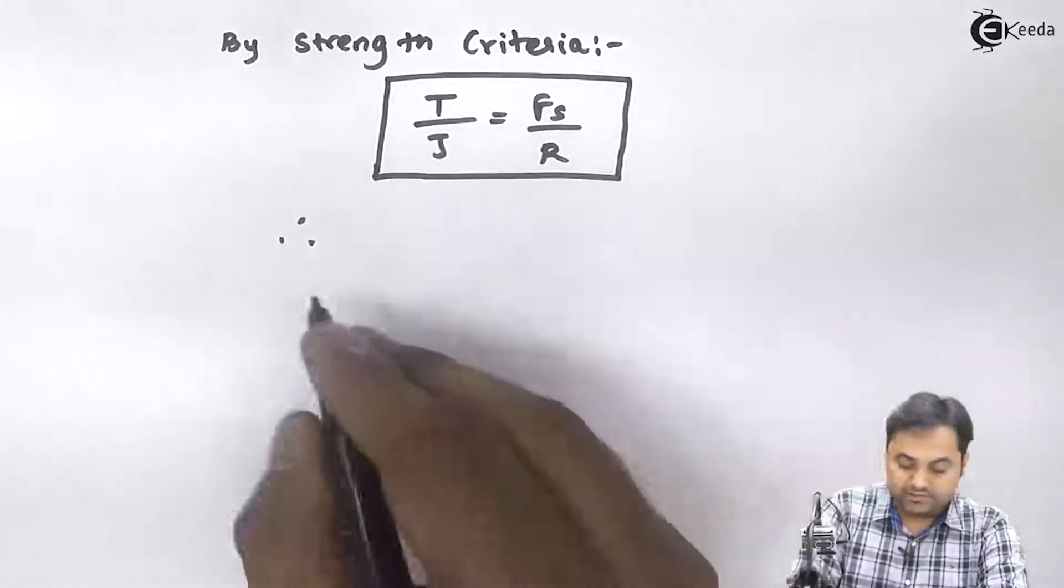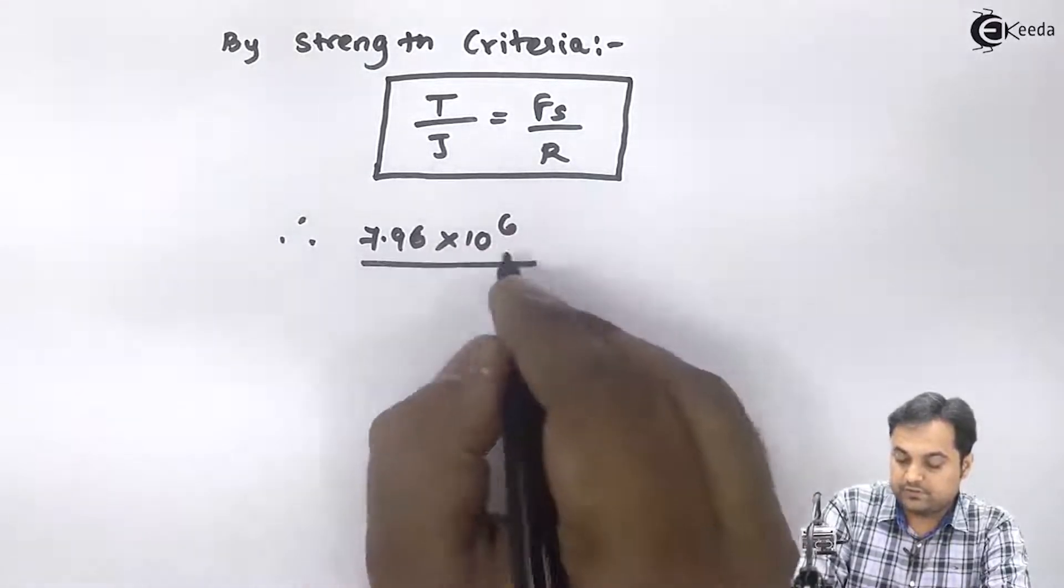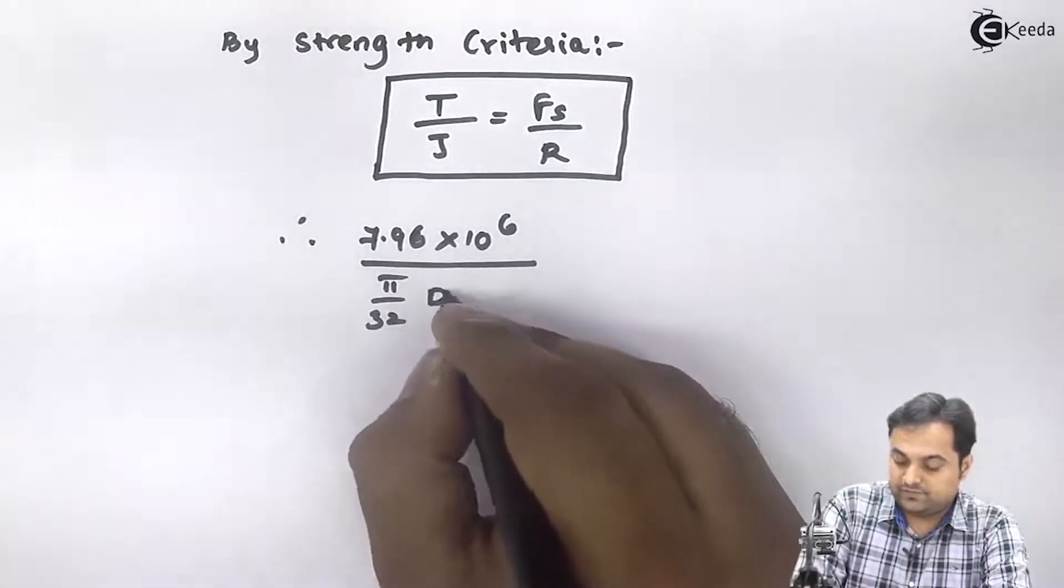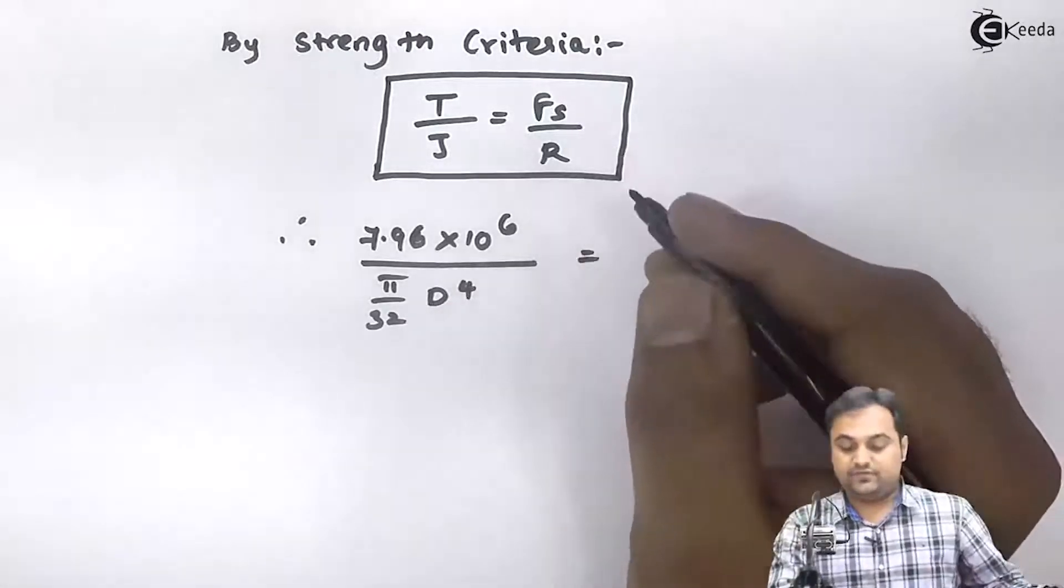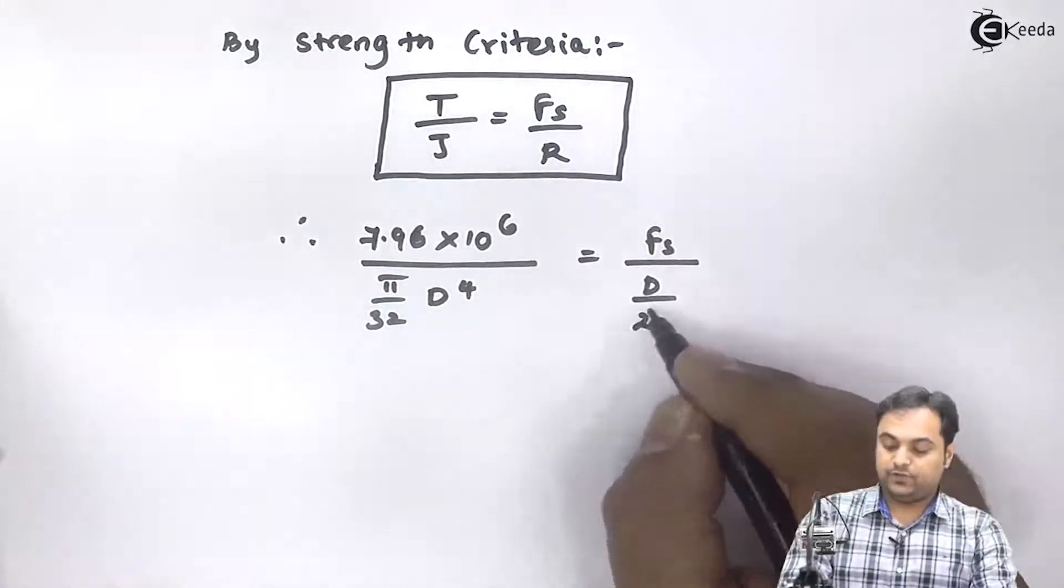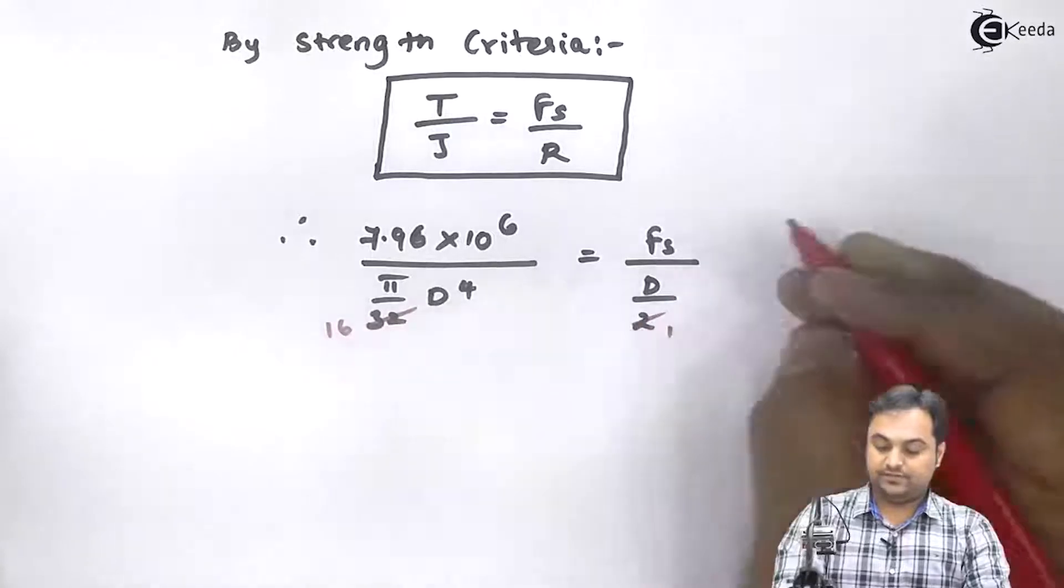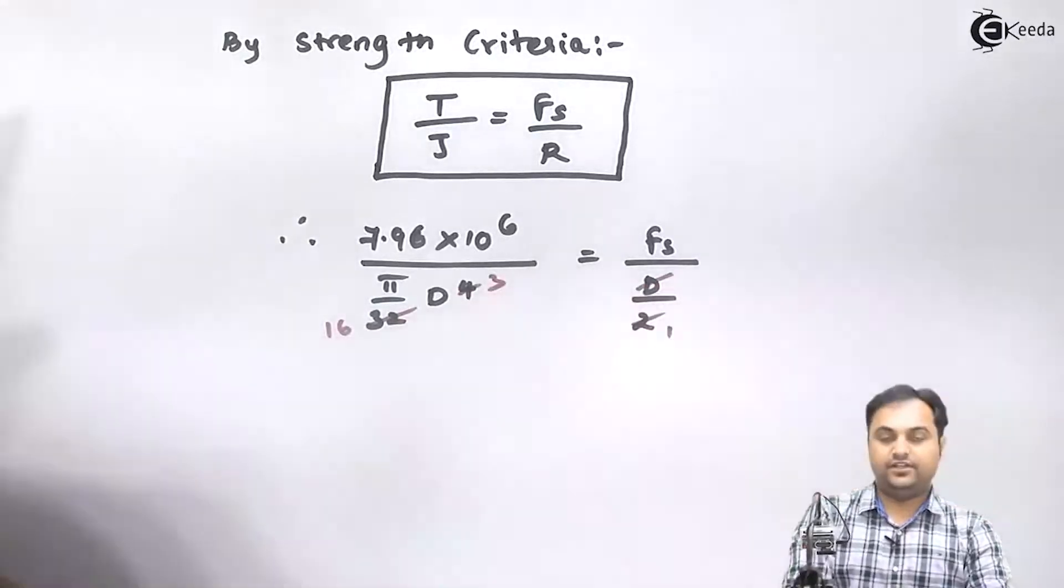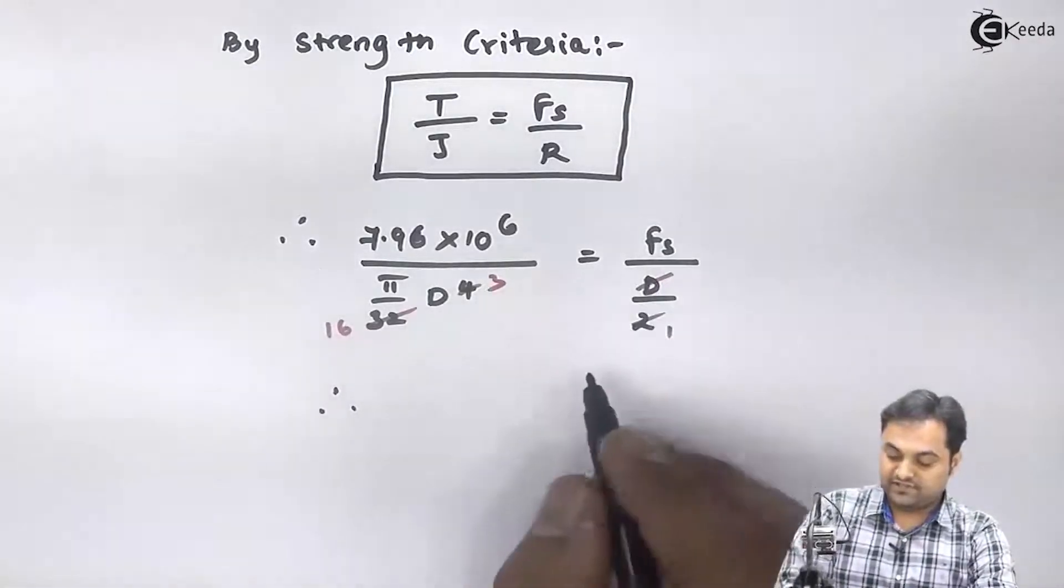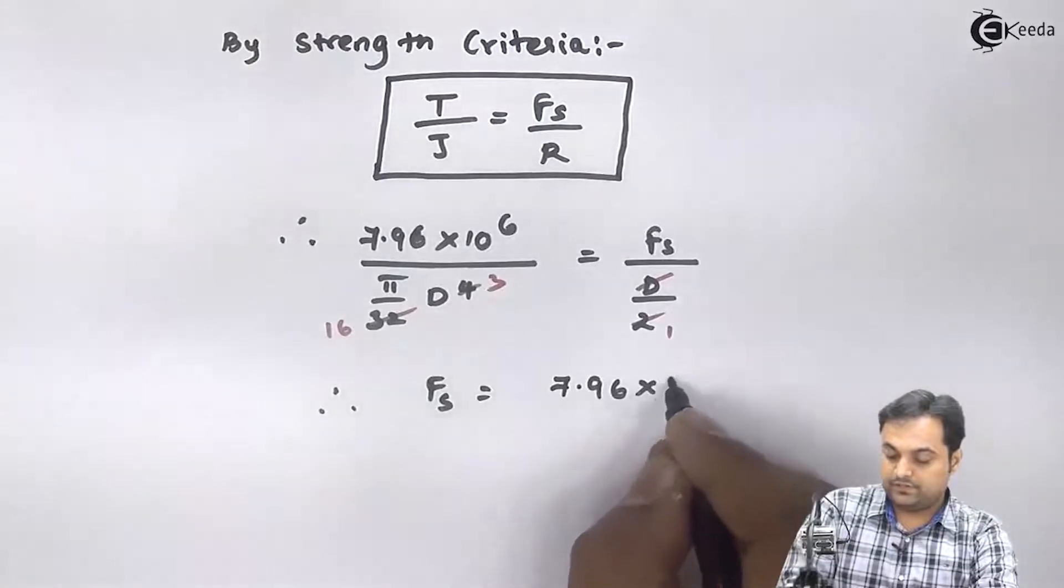So therefore torque is 7.96 into 10 raise to 6. J for solid shaft it is pi by 32 D raise to 4. FS is what we have to calculate, radius is diameter by 2. So here if I cancel this, I have 16, diameter gets cancelled out, so here I have D cube. So therefore I will say that FS is equal to 7.96 into 10 raise to 6.